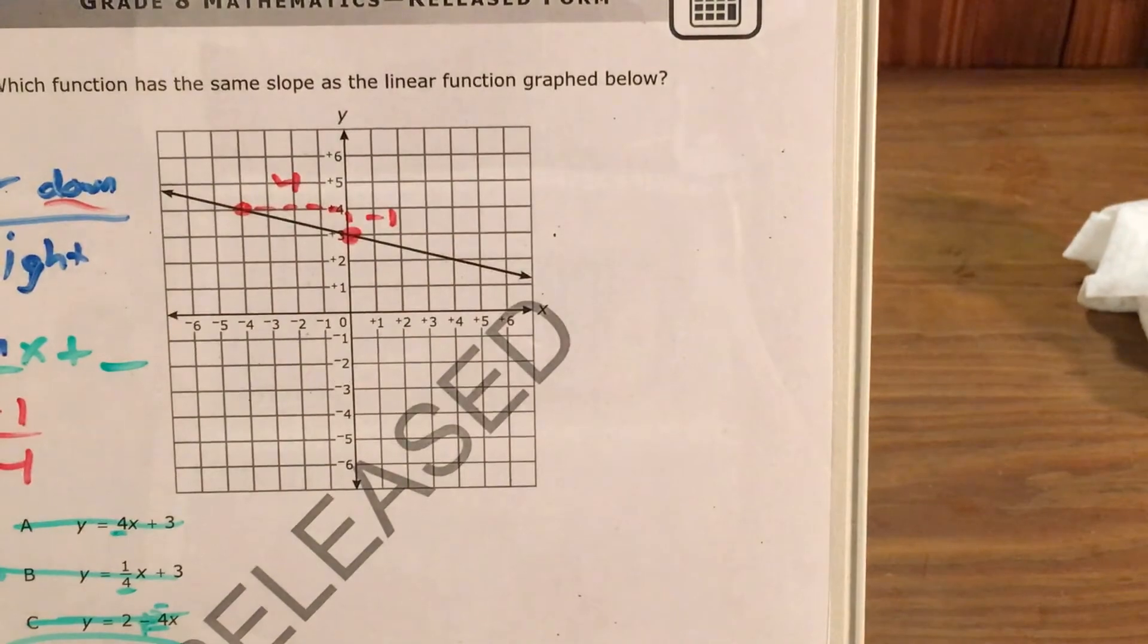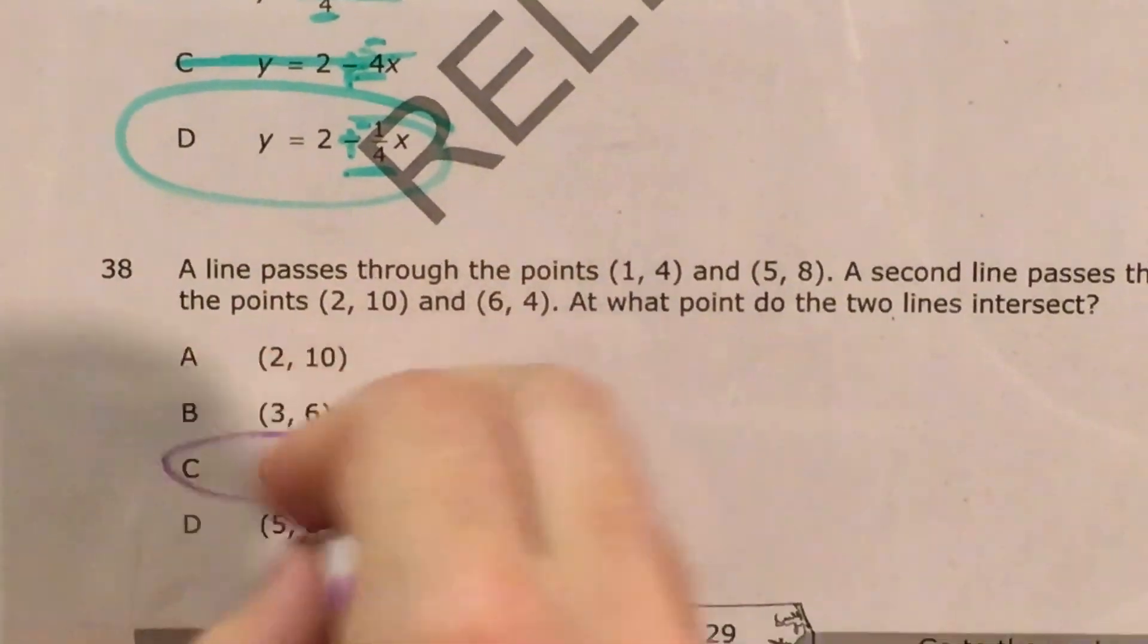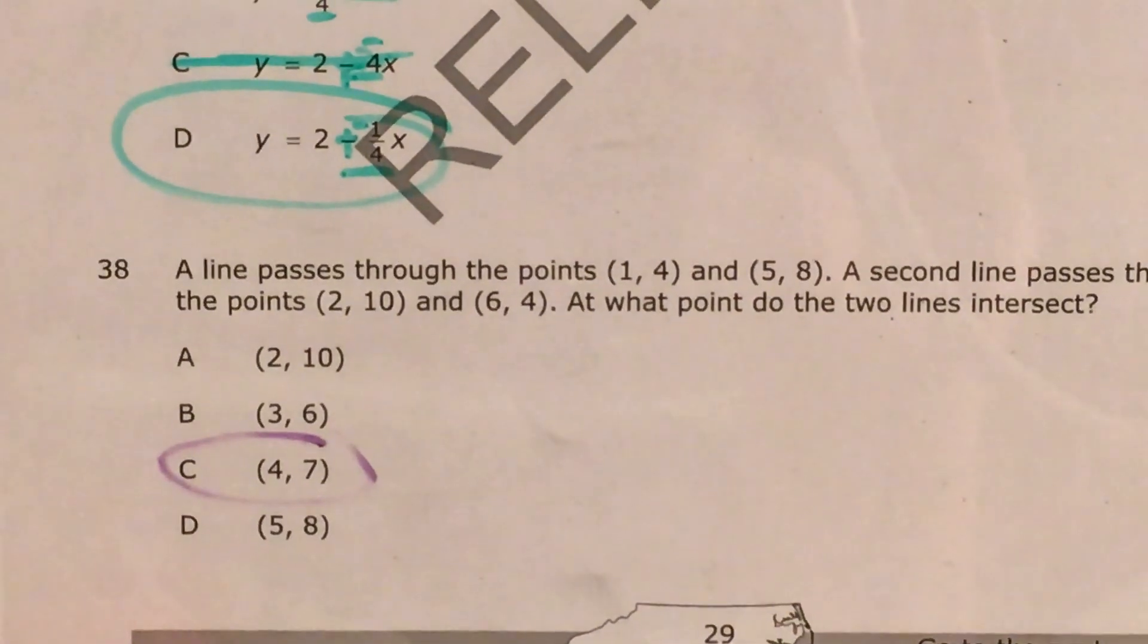So just for the finality of it, I'm going to bubble in my answer, point C, x of 4, y of 7.